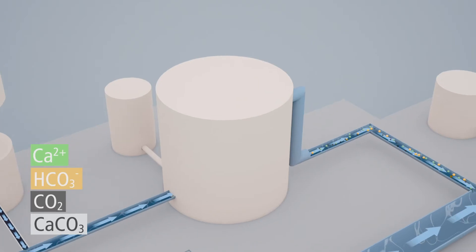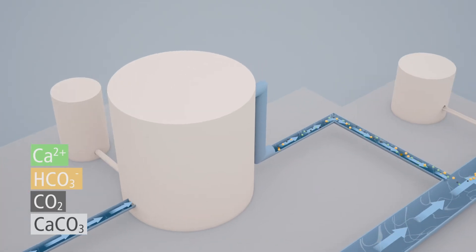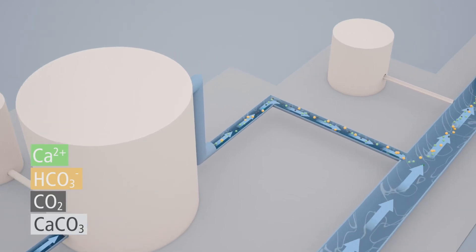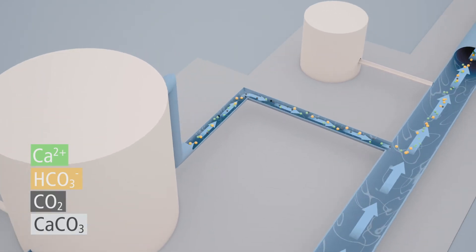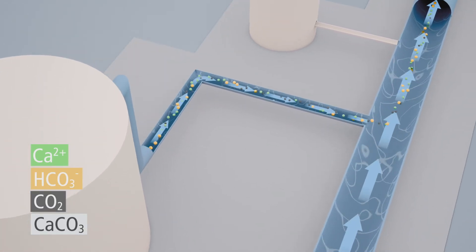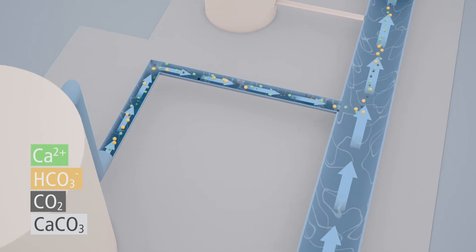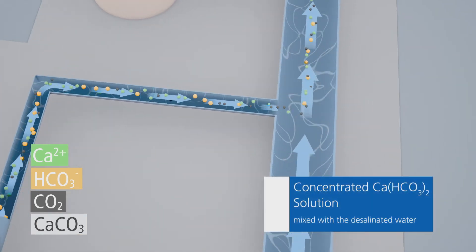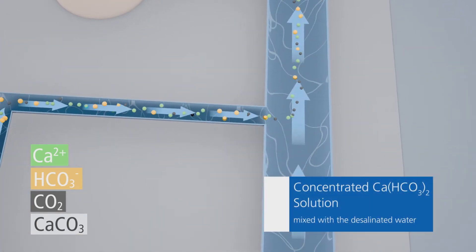The concentrated calcium bicarbonate solution from the membrane calcite reactor is mixed with the main water stream to increase the calcium content and alkalinity of the desalinated water.